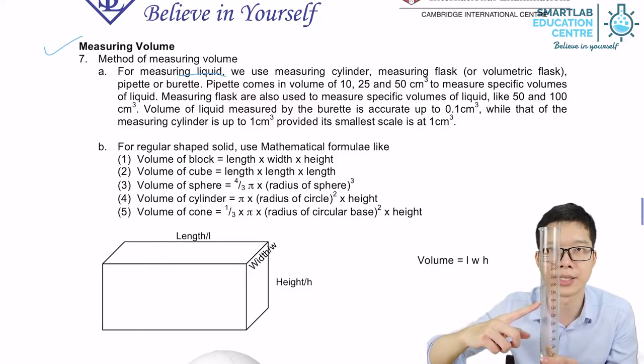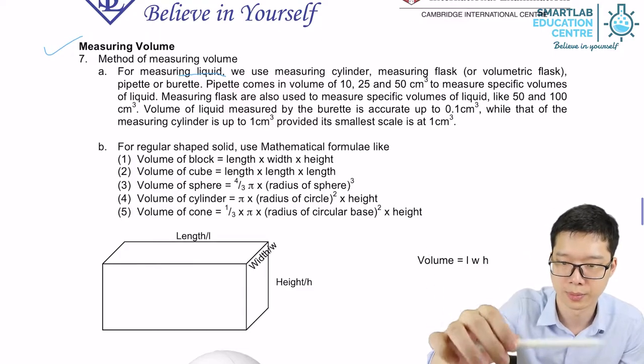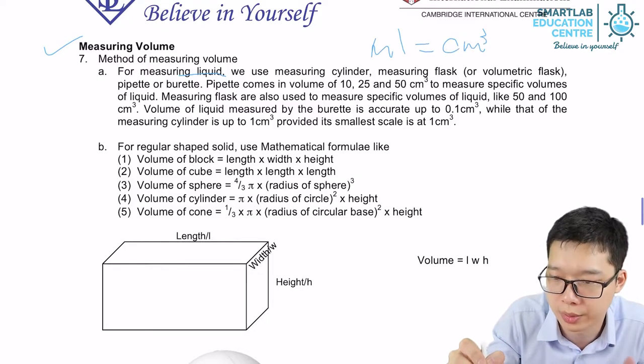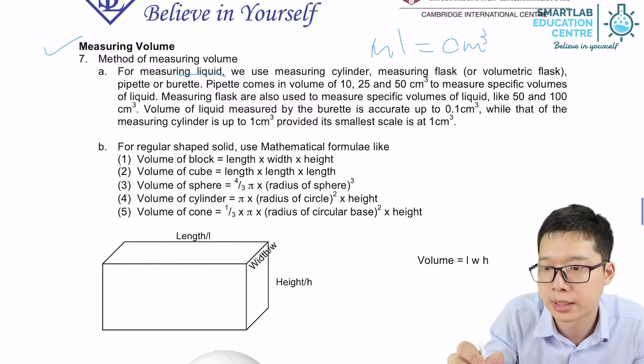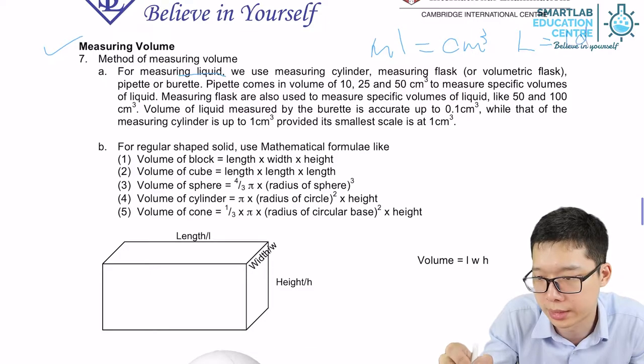ml is actually cm³. So ml is actually cm³. So that, if you still remember, on the last part, we also learned 1 liter equals to 1 dm³.